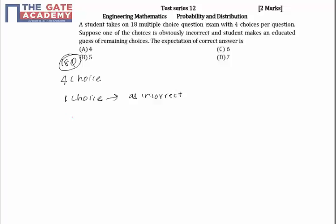The student makes an educated guess — please underline this well: educated guess. Educated guess means the student is not going to answer a choice which is obviously incorrect. So we eliminate that one, and there are 3 remaining choices. If educated guess were not mentioned, it would mean the student is answering blindly. But since educated guess is mentioned, he identifies the obviously incorrect option and does not answer it.